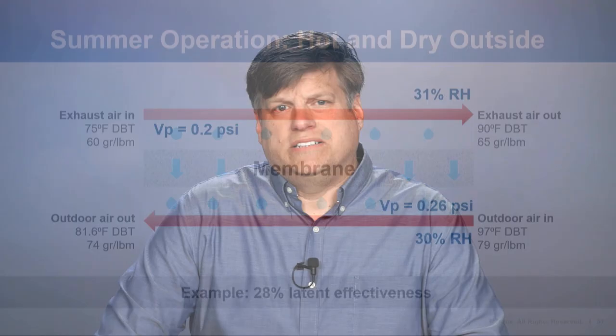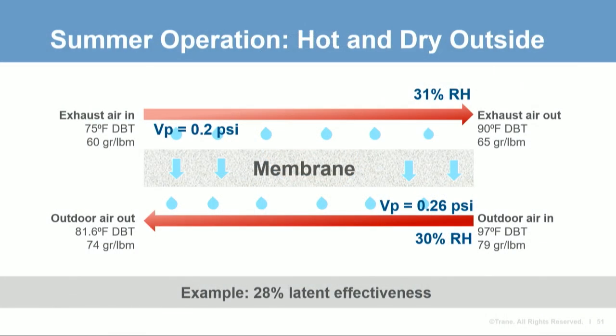During winter heating mode, the latent effectiveness will be highest. When it's hot and dry outside, the latent effectiveness will be lowest, though there is not much humidity to transfer at that condition. The latent effectiveness will be higher during a hot humid day when recovery is needed most versus a hot dry day. The degree of this variance will depend on the membrane used.